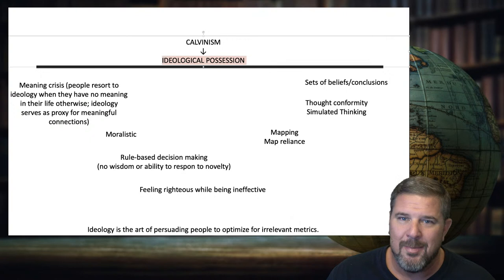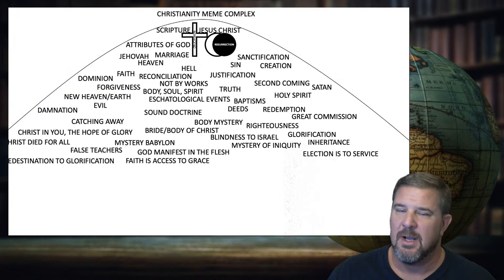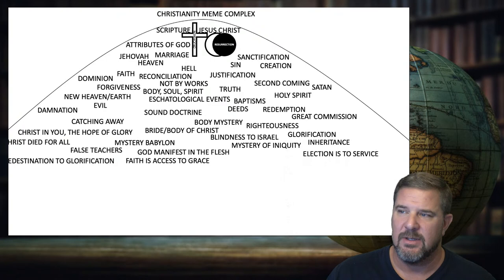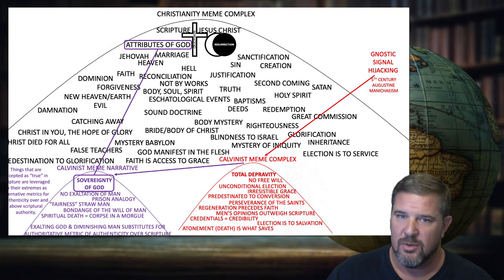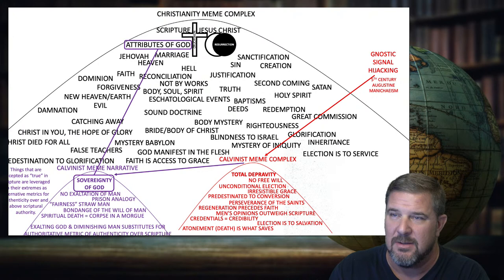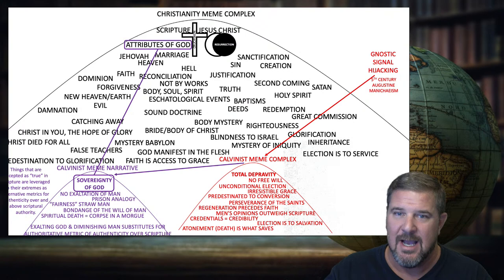Ideological possession is another way of saying being beholden to a paradigm, or confusing the map for the terrain. A paradigm is like a meme complex — a set of ideas that when put together forms a particular worldview. The Calvinist paradigm is nested within the Christian paradigm, and that's the only reason for convergence on some things, but it has its own distinctives.